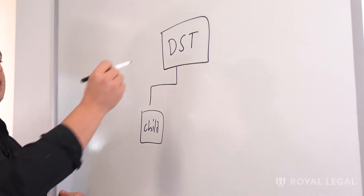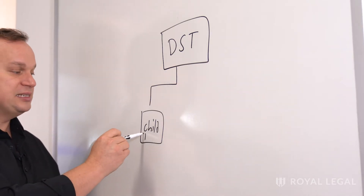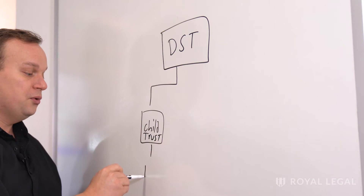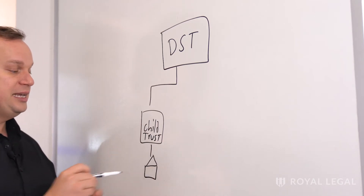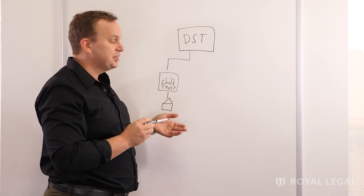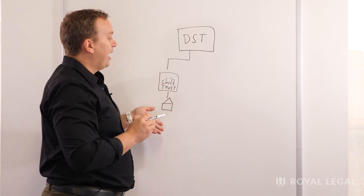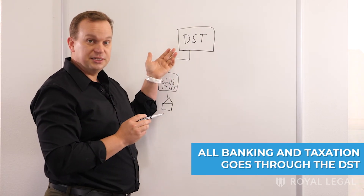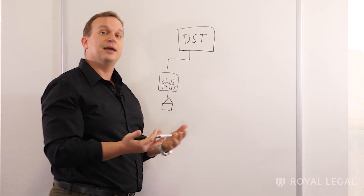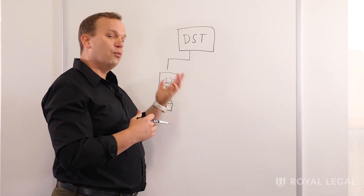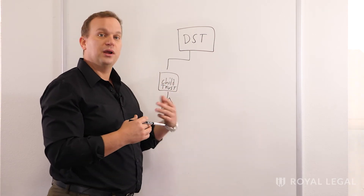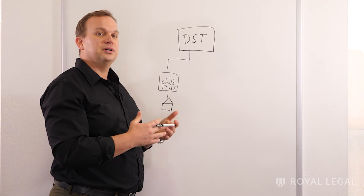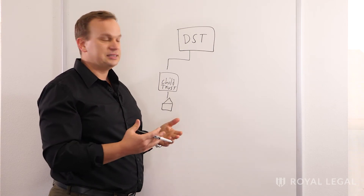What's great is that this is a trust — and a child trust as well. You can place each property underneath your child trust and have all of the cash and money flow through your DST. The DST is a type of grantor trust, so it'll have one EIN number and one bank account, but all of the taxation flows through it as a pass-through entity.